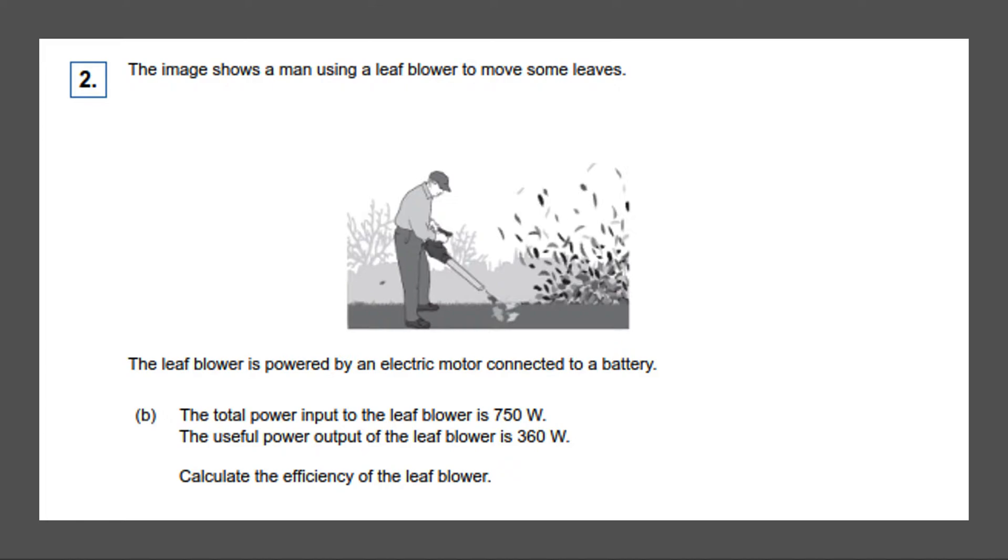So the useful energy input is 360 watts and the total energy is 750 watts. So we would do 360 over 750. These two can cancel out and then we can just type this into our calculator. 36 divided by 75. This would give you 12/25 as a fraction. And then we can simplify this to 0.48. We can leave this as our decimal or we can convert this to a percentage by multiplying by 100 and turning it into 48%. That is also acceptable.